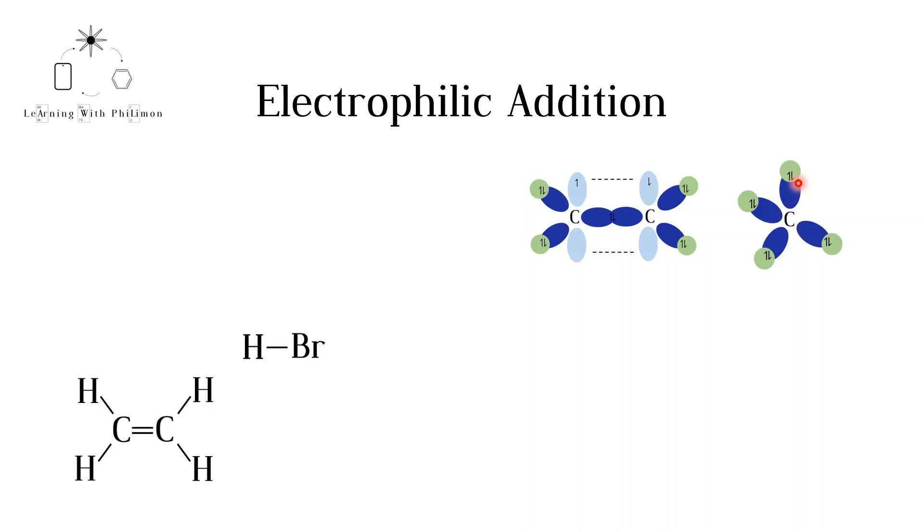As we saw in the polarity video, when one element is more electronegative than the other, it pulls the shared pair of electrons closer to itself creating a polar bond. This is the case in hydrogen bromide. Bromine is more electronegative than hydrogen. So bromine is slightly negatively charged, as denoted by the delta minus, and hydrogen is slightly positively charged, denoted by the delta plus.